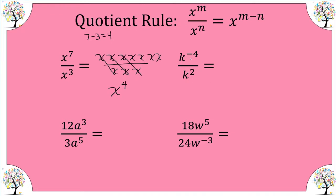Let's look at k to the negative four over k squared. We can't leave the negative, but let's apply the rule first. We start with the numerator base k, then subtract: negative four minus two gives us negative six. Now we clear up the negative exponent and get one over k to the positive six.